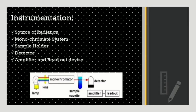Moving towards the instrumentation of UV visible spectroscopy, we use the UV visible spectrophotometer. The instrumentation consists of a source of radiation, monochromator system, sample holder, detector, amplifier, and readout device.